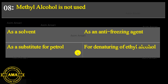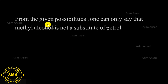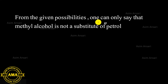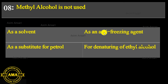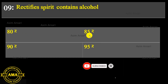Next MCQ: Methyl alcohol is not used as — a solvent, an anti-freezing agent, a substitute for petrol, or for denaturing of ethyl alcohol? From the given options, methyl alcohol is not a substitute for petrol. The exact answer is: as a substitute for petrol.